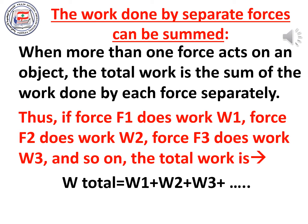Today we are going to talk about the total work when we have several forces acting on an object. The work done by separate forces can be summed. When more than one force acts on an object, the total work is the sum of the work done by each force separately. If force F1 does work W1, force F2 does work W2, and force F3 does work W3, then W total equals W1 plus W2 plus W3. So we find the work of each force and add them to find the total work.